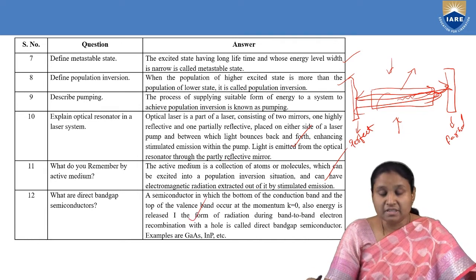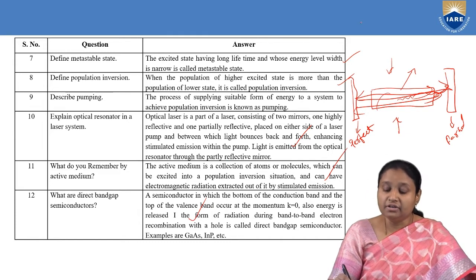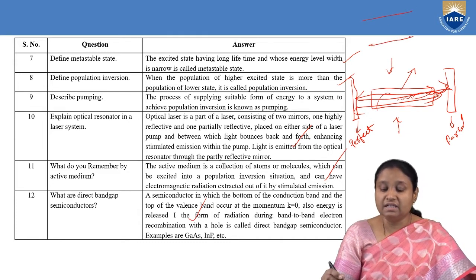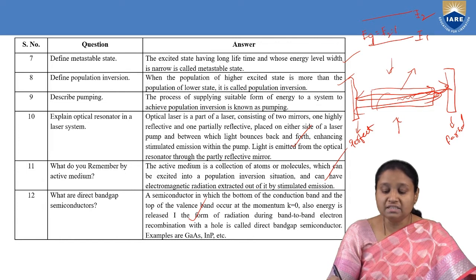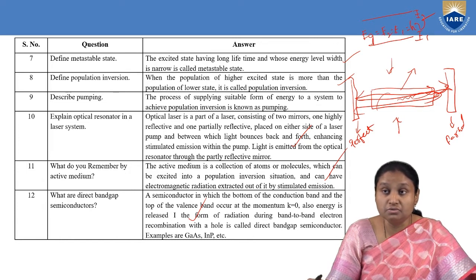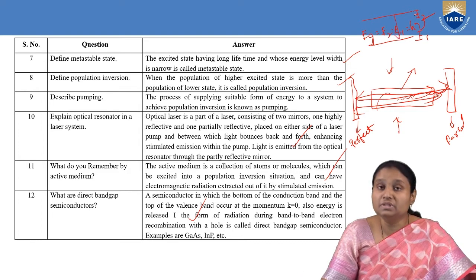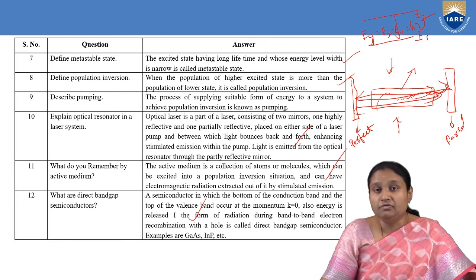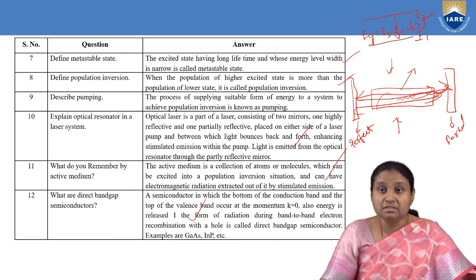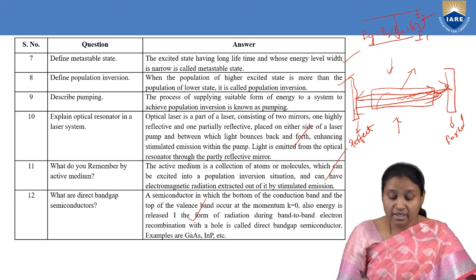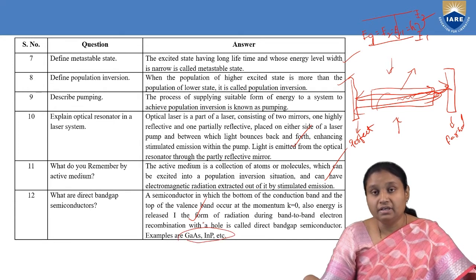What are direct band gaps in a semiconductor? If we consider two energy levels E1 and E2, the difference E2 minus E1 equals h-nu, the energy of the photon. When an atom de-excites from the higher state to the lower state, it emits energy in the form of light. Direct band gap semiconductors are formed by combining elements from different groups — examples include gallium arsenide and indium phosphide.